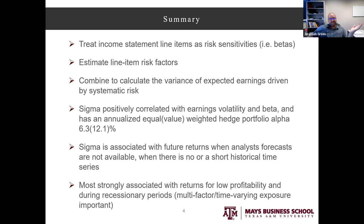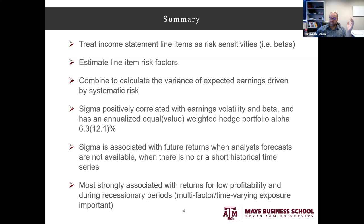Let me give you an overview of what the paper looks like, because when we get into how we're measuring things, it can get bogged down. The main starting point — both conceptually and empirically — is that income statement line items are the risk sensitivity. When you see revenue, that tells you about beta in the sense of systematic exposure to some factors. Higher revenue, higher or lower risk; higher cost of goods sold, higher or lower risk. That's our starting point for thinking about risk in the cross-section.